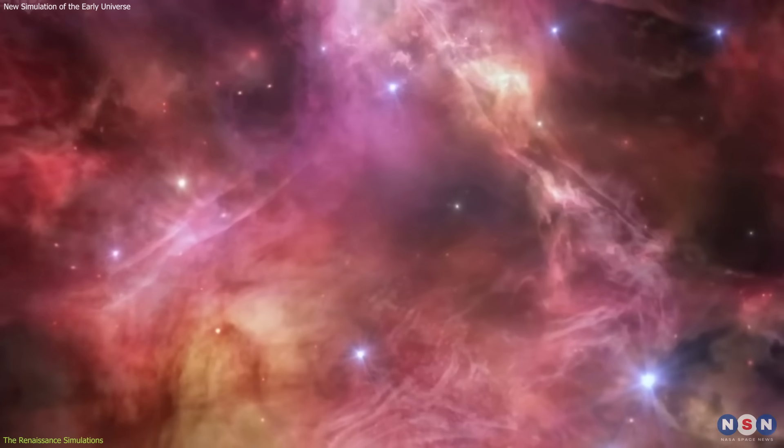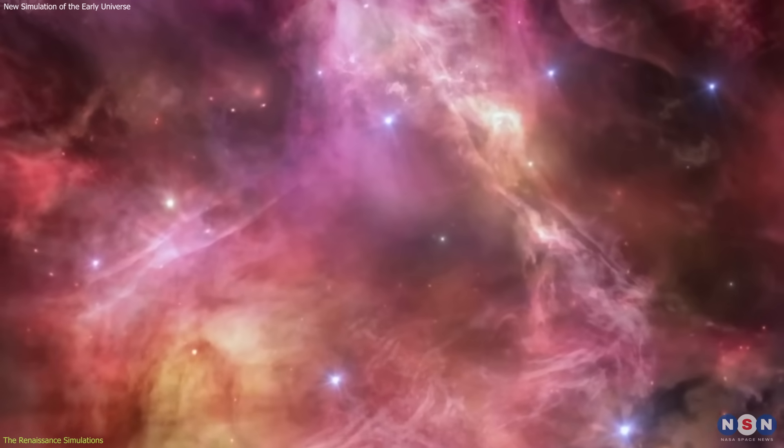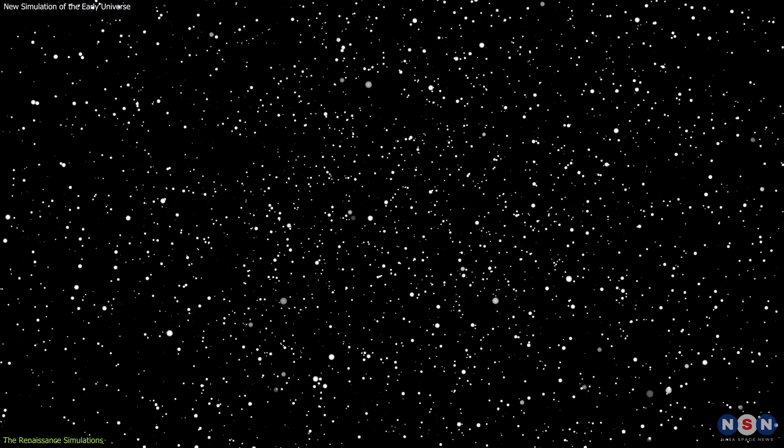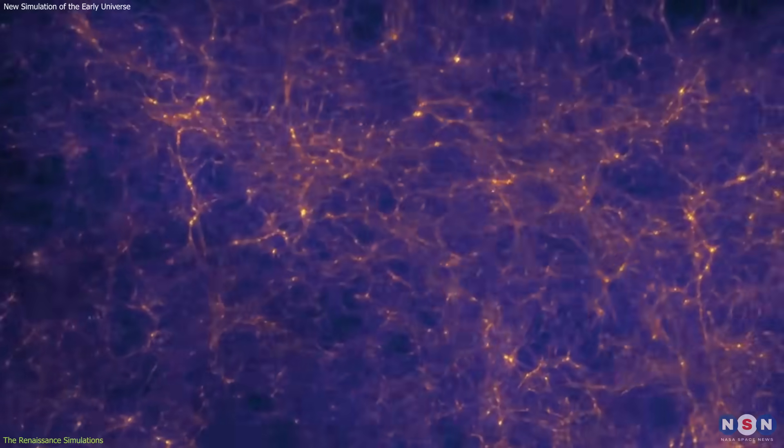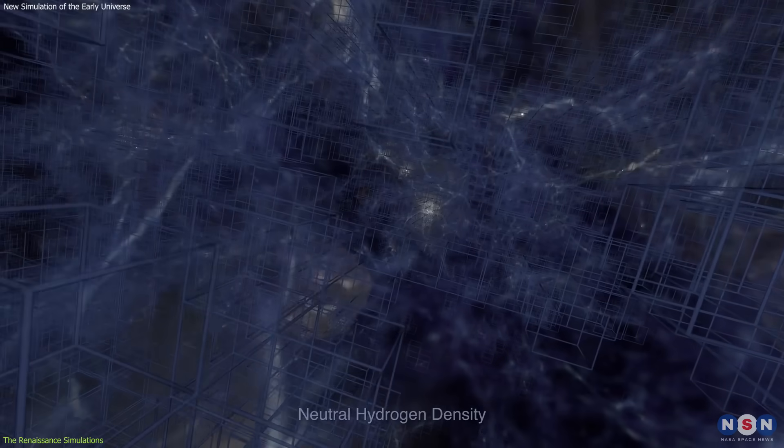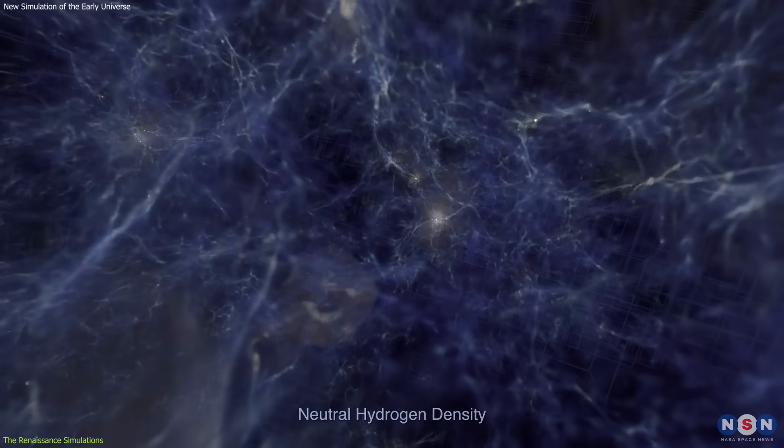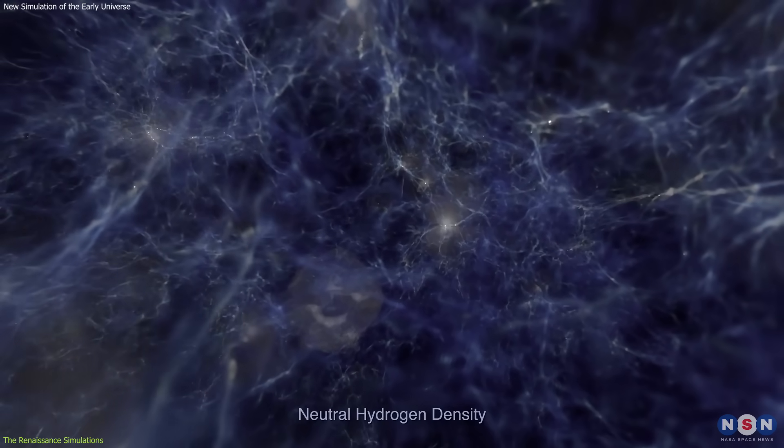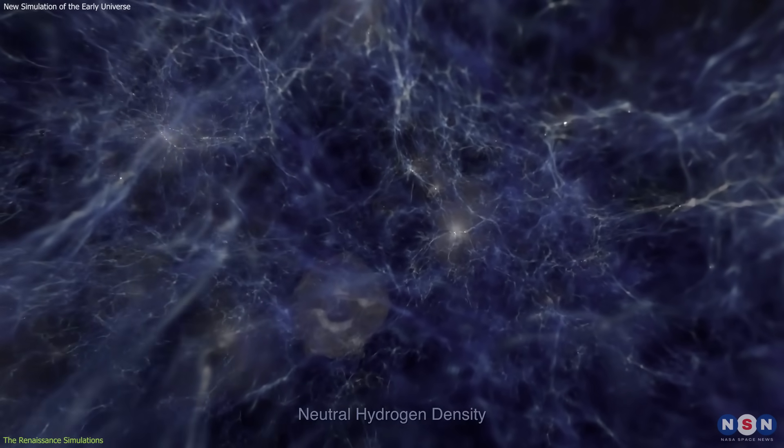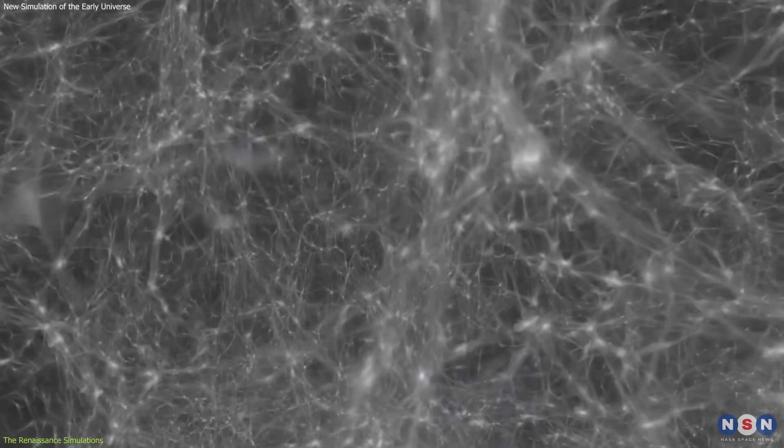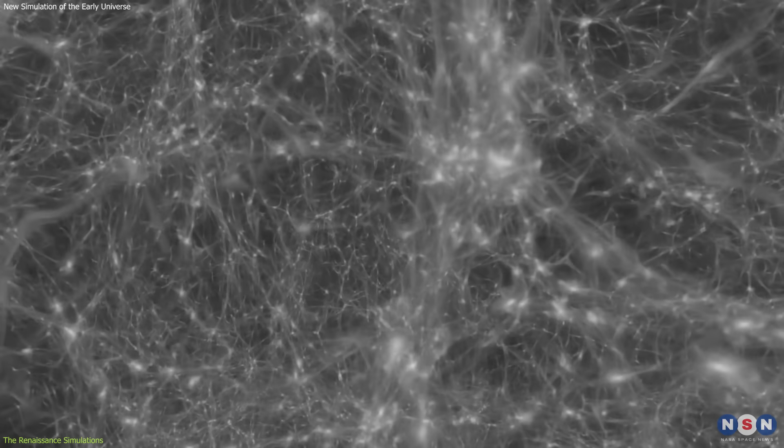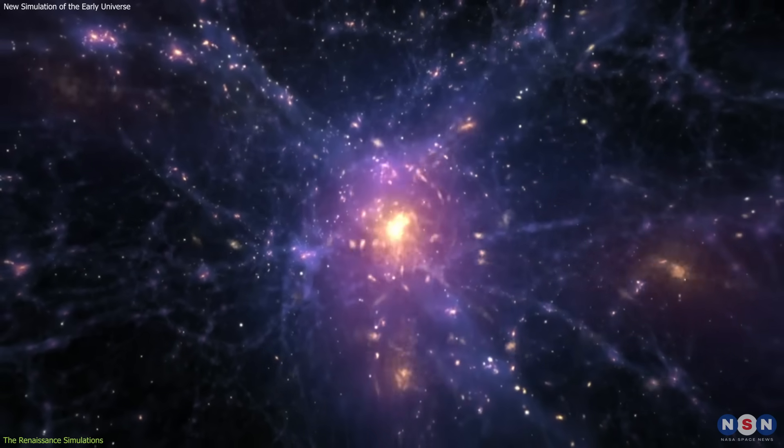This is the era when the first stars and galaxies formed in the universe, and when the universe transitioned from being dark and neutral to being bright and ionized. The Renaissance Simulations are different from previous simulations of the early universe because they can resolve very small dark matter clumps, as small as 10 to the power of 5 solar masses, and track their evolution into galaxies.